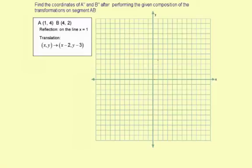So over 1, up 4. And then over 4, up 2. So this is point A. And this is point B. And here's segment AB.